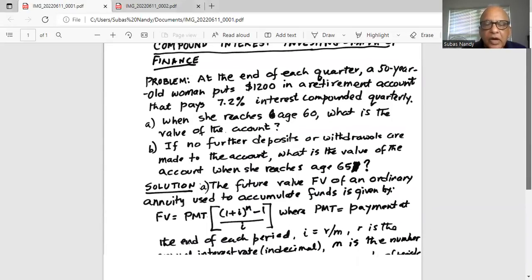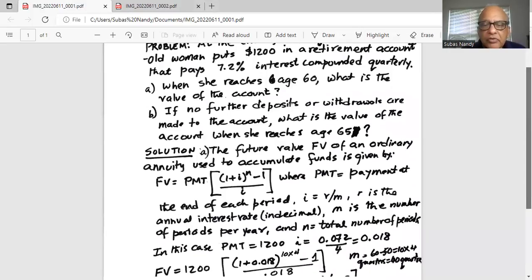In order to solve Part A, we have to use the formula for the future value FV of an ordinary annuity used to accumulate funds, is given by annuities where we make regular deposits, like this woman does $1,200 at the end of each quarter. The formula is FV equals payment, which is the amount she puts into the account at the end of each quarter, multiplied by, in parenthesis, 1 plus I raised to the power of M minus 1 divided by I.